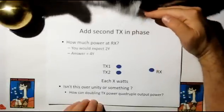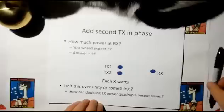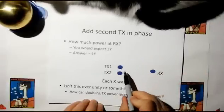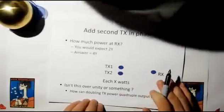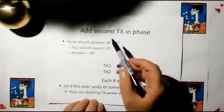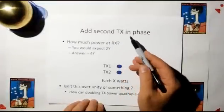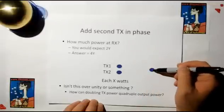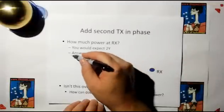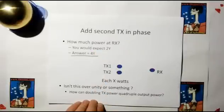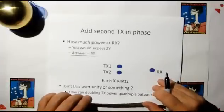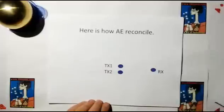Now let's add another transmitter in phase to the original one, so that we get transmitter one and transmitter two, and they're transmitting in phase to the receiving antenna. So how much power could we expect to receive? You would expect that if you've got double the antenna, you should see double the power. The answer is you get quadruple the power at the receiver. You'd ask, well gee, this sounds like over unity. How can doubling the transmit power quadruple the output power?